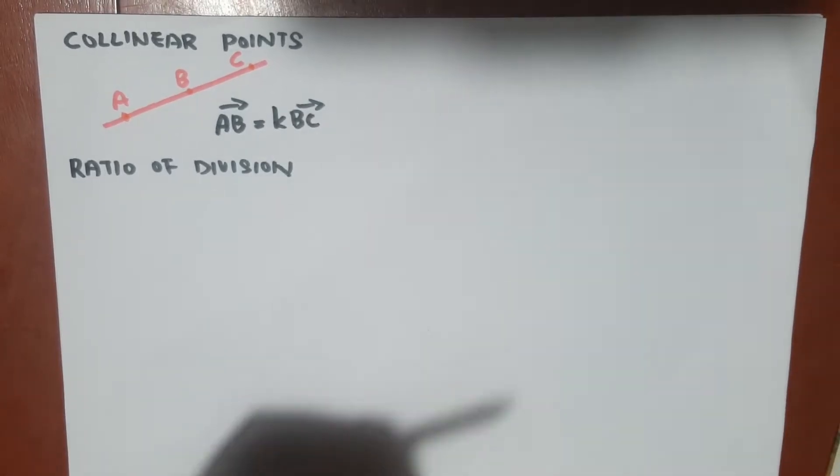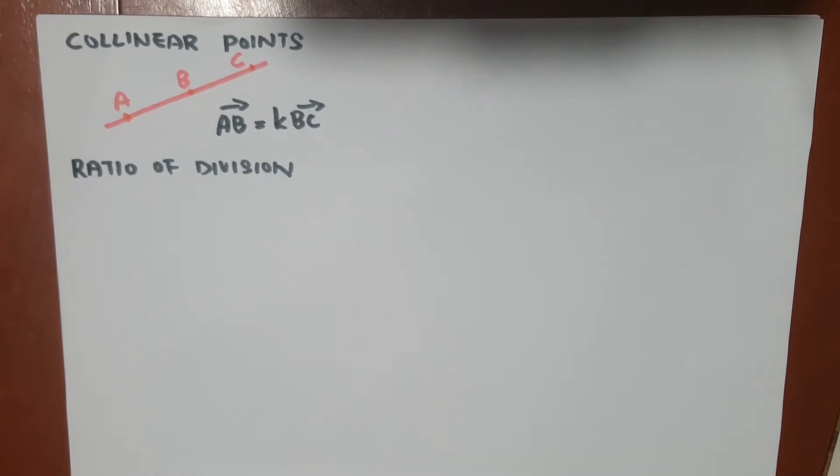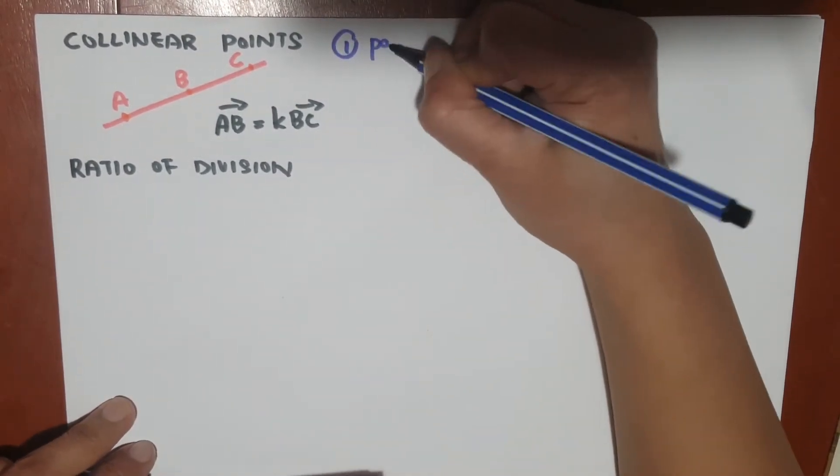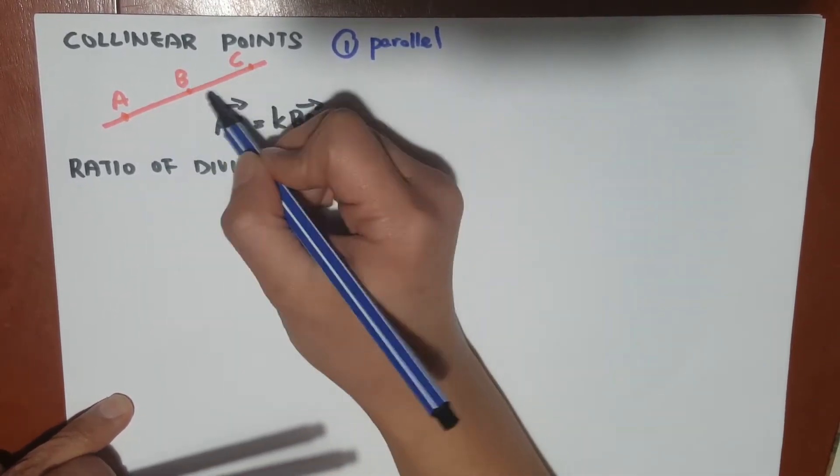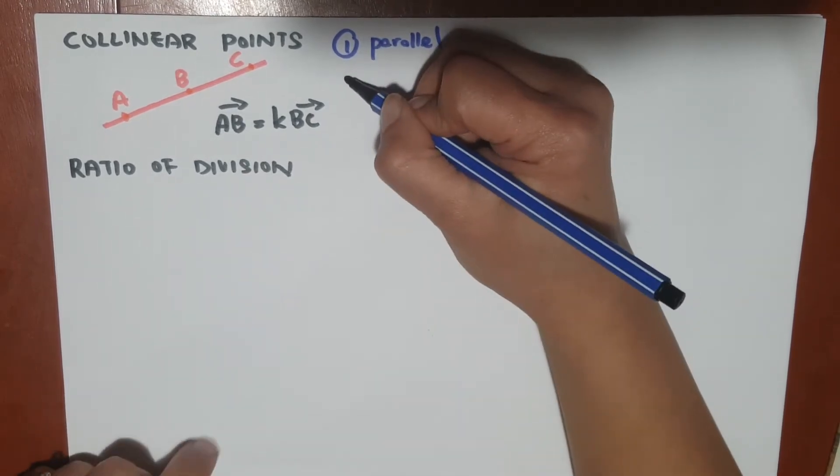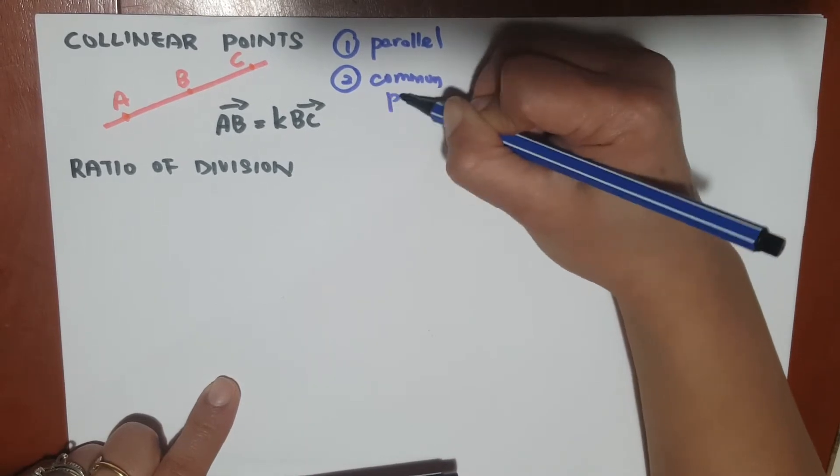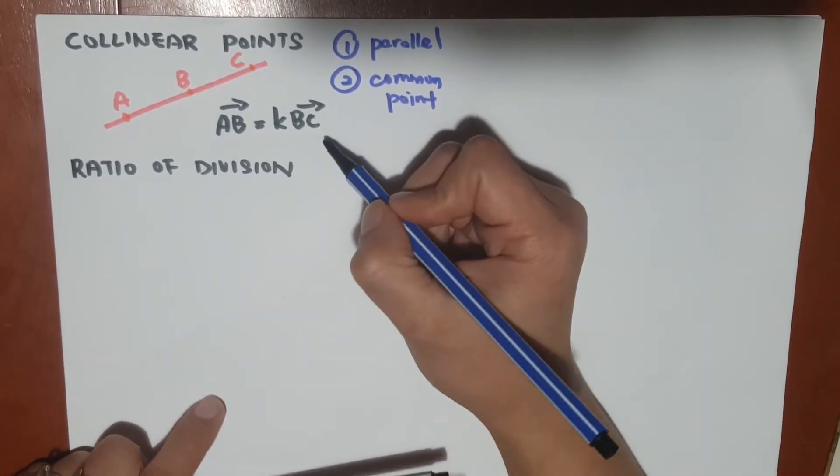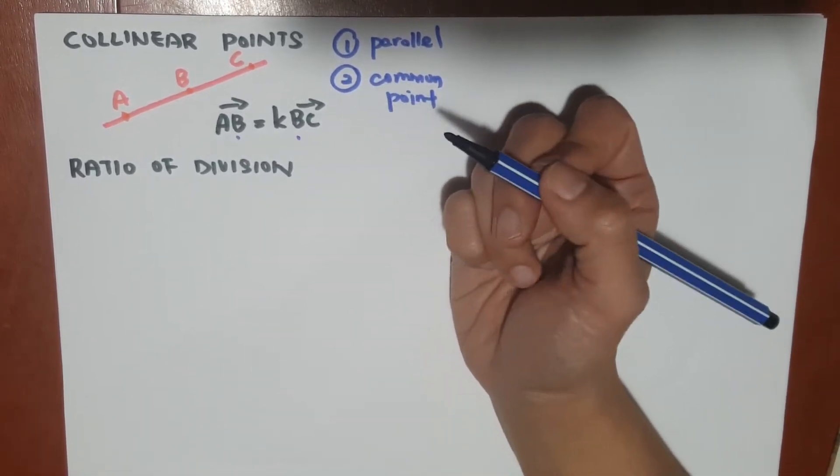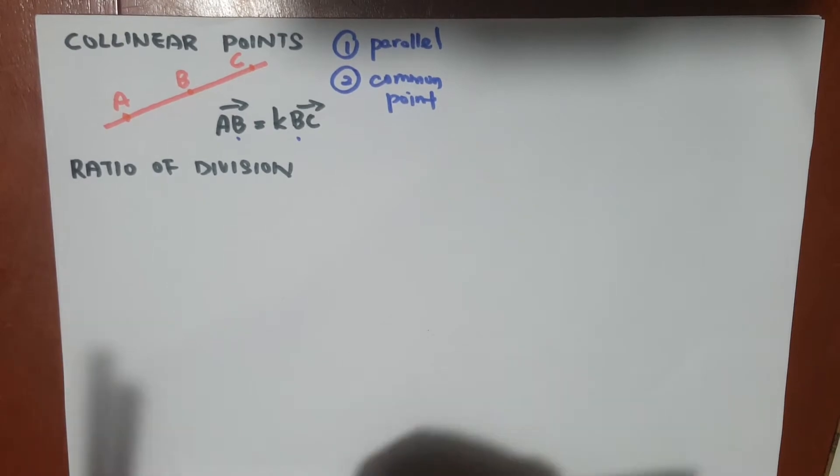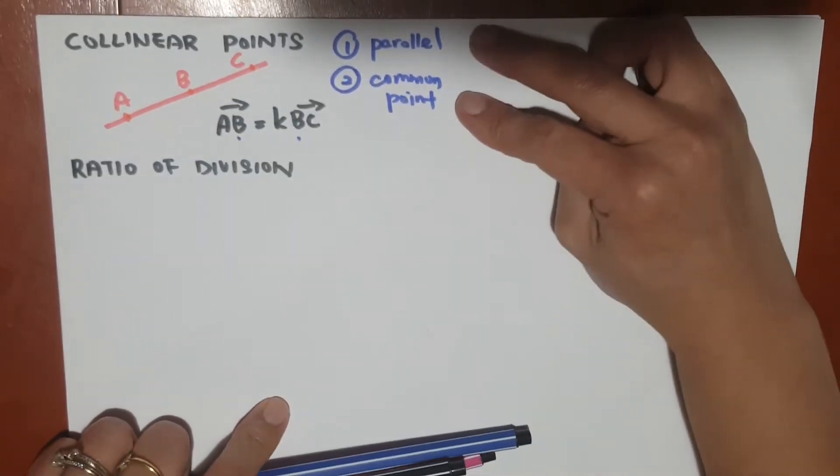Collinear points actually have two features. One is they are parallel. If you're considering the vector AB and BC, they are parallel. And number two, they have a common point. In this formula, B is the common point. So in order to prove that points are collinear, we need to have them satisfying these two criteria.